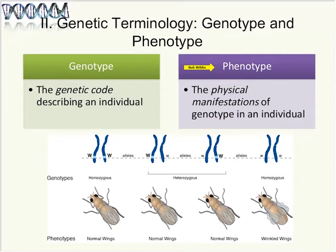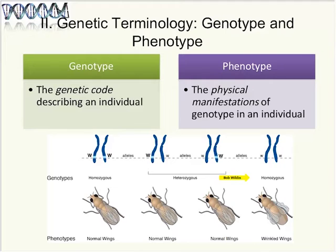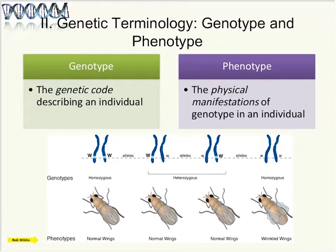We may not know the genotype, but we can assess the phenotype through clinical exam, radiologic exam, or laboratory tests. Using a fruit fly example: phenotypes are normal wings or wrinkled wings. Only flies with a homozygous recessive genotype — small w, a loss-of-function mutation — have wrinkled wings. Those with homozygous normal large W or heterozygous large W/small w all have the same normal phenotype, illustrating how different genotypes can lead to the same phenotype.